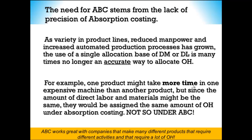As product variety has grown and automated production has increased, using a single allocation base of direct labor is often no longer accurate. Think of a modern automobile assembly plant versus the era of the Model T — robots now do much of what people used to do, and the cost of those robots ends up in overhead. For example, one product might use an expensive machine far more than another, but with the same direct labor hours both get the same overhead under absorption costing. That doesn't make sense, and activity-based costing solves that.